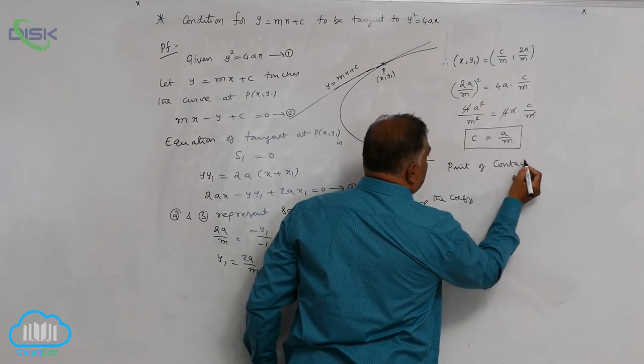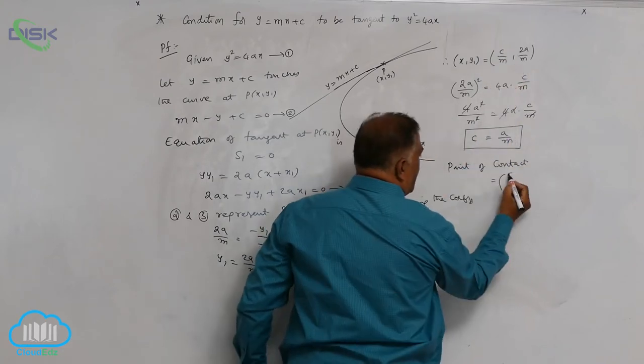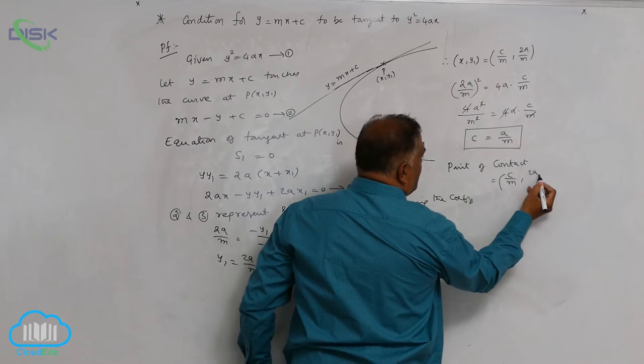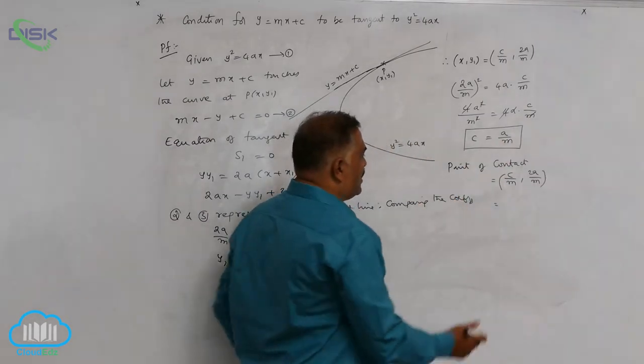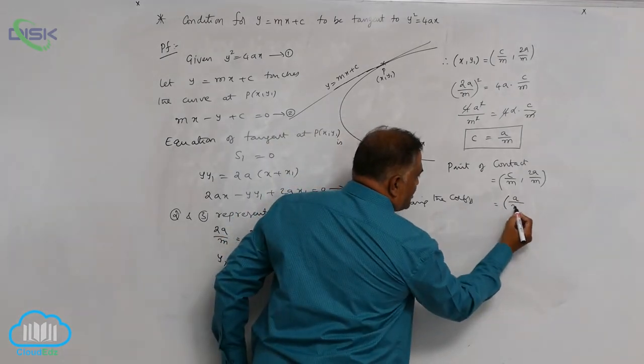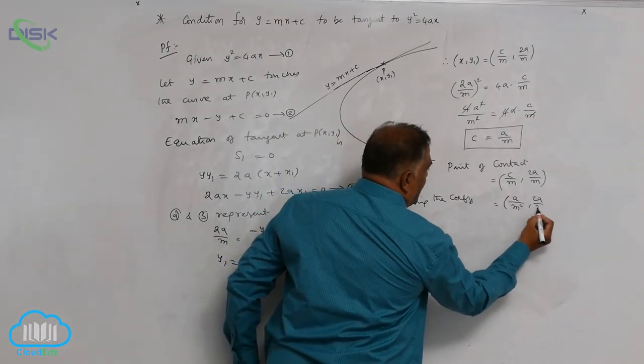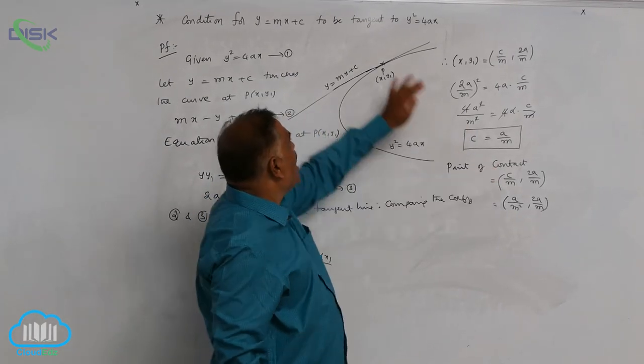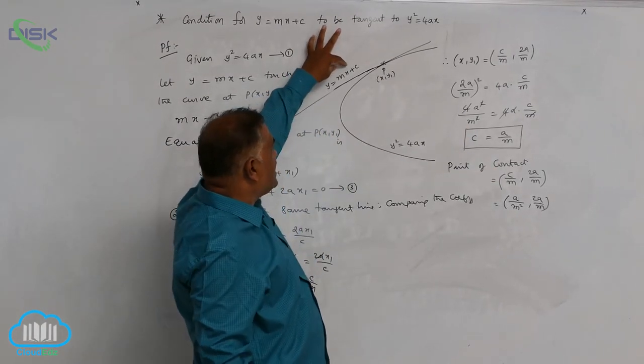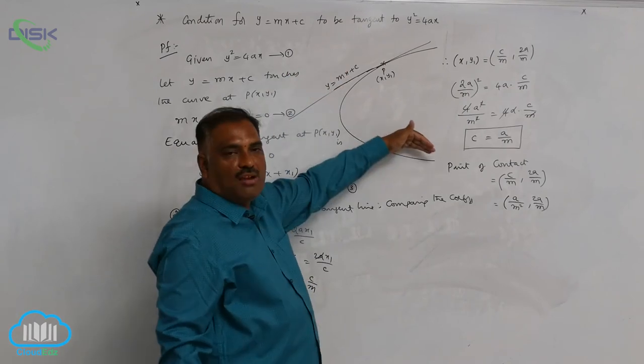Since we know that c = a/m, substitute this. The point of contact becomes (a/m², 2a/m). This is the point of contact when y = mx + c touches the parabola.